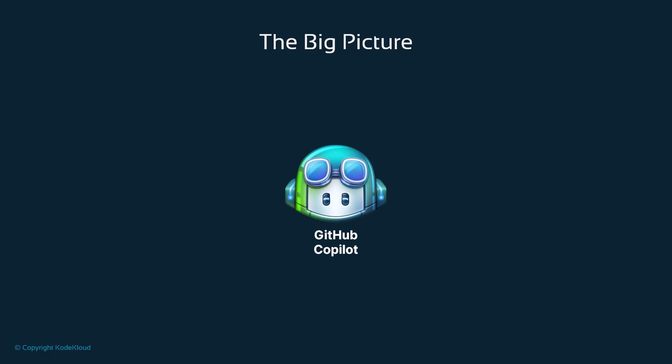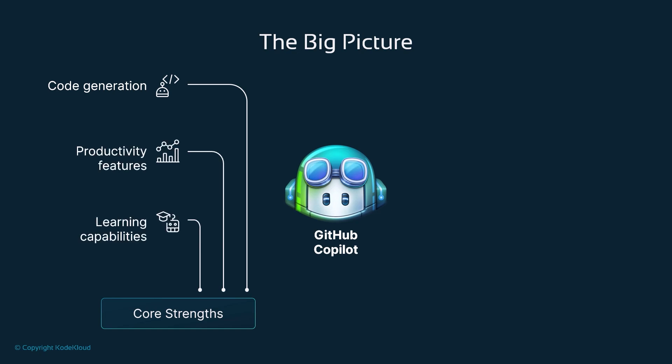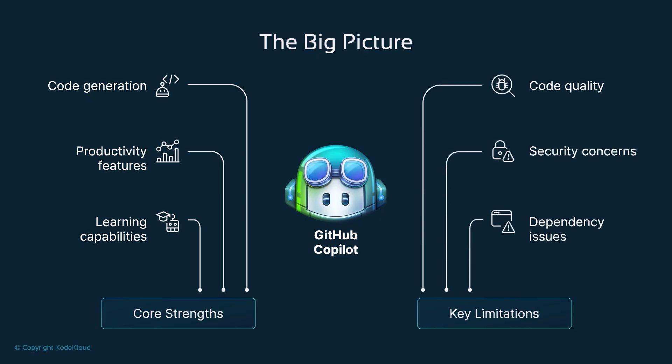Let's look at some of the strengths and limitations of GitHub Copilot. Starting with a high-level overview of its architecture: on the left we have its core strengths — code generation, productivity features, and learning capabilities. On the right, we see its limitations around code quality, security, and dependencies. This balanced understanding is crucial for using Copilot effectively.